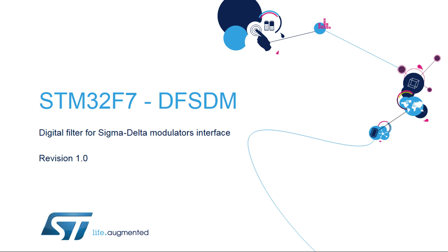Welcome to this presentation of the STM32 Digital Filter for Sigma Delta Modulators Interface. It covers the features of this interface, which behaves like an analog-to-digital converter, or ADC, with an external analog part and configurable speed-versus-resolution ratio.